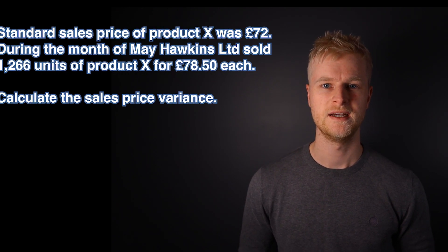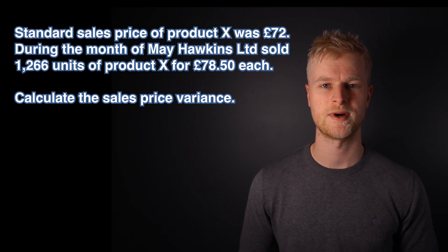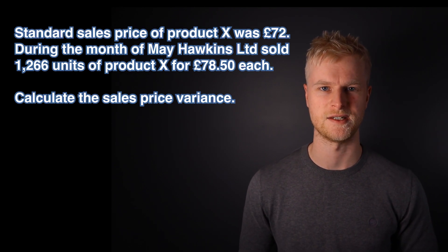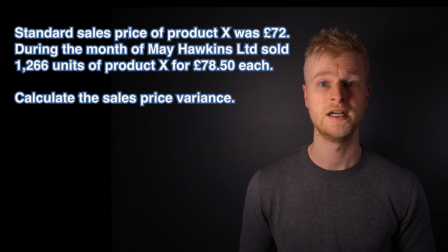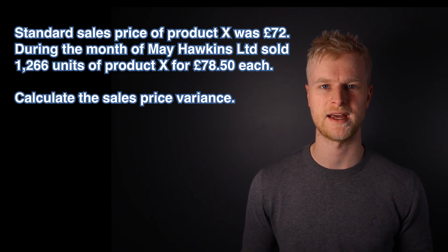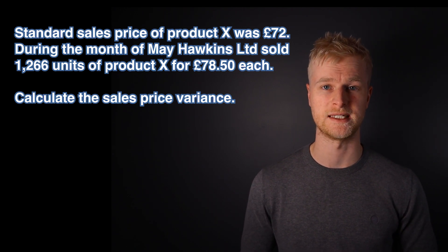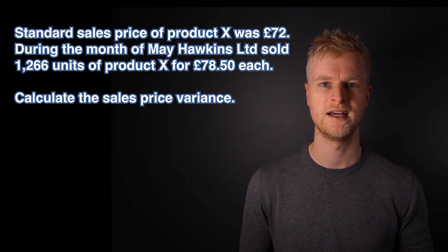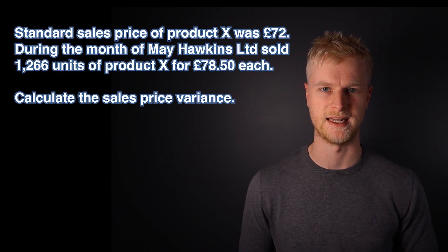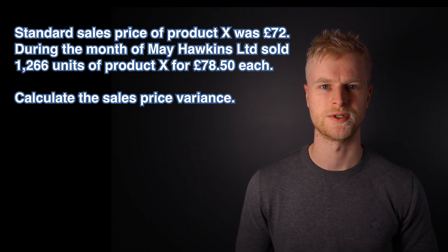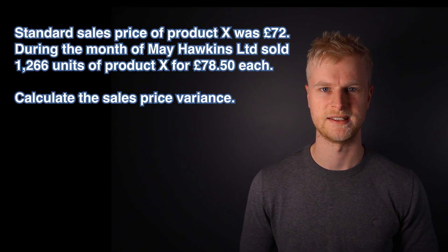Let's put this into an example. The standard sales price of Product X was £72. During the month of May, Hawkins Limited sold 1,266 units of Product X for £78.50 each. Calculate the sales price variance.